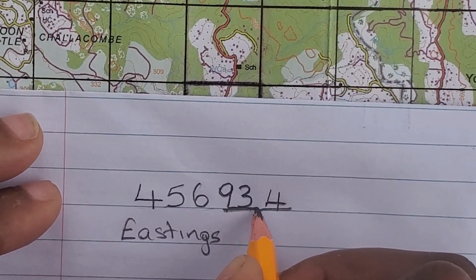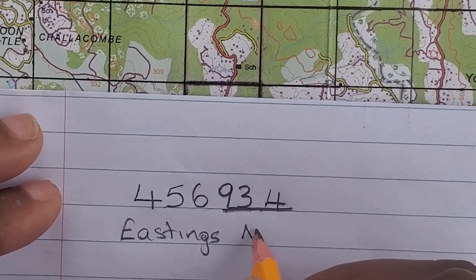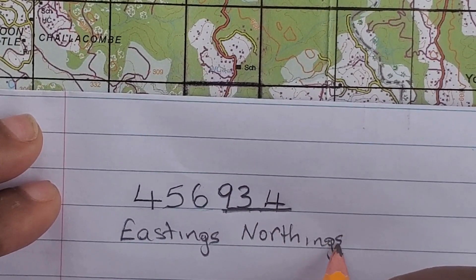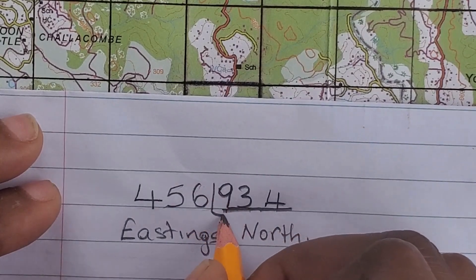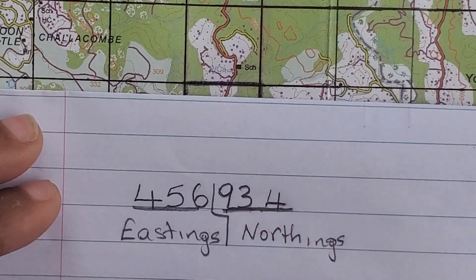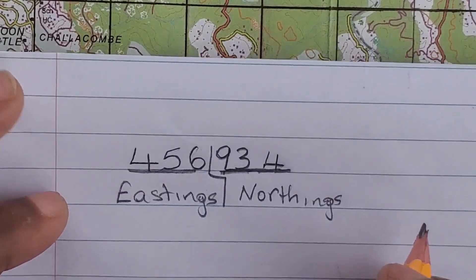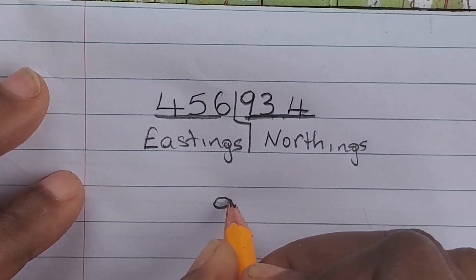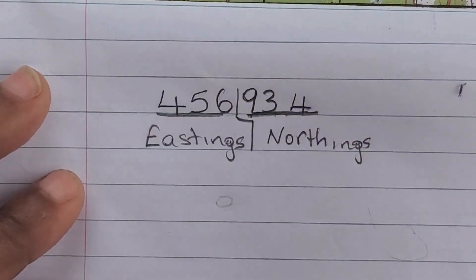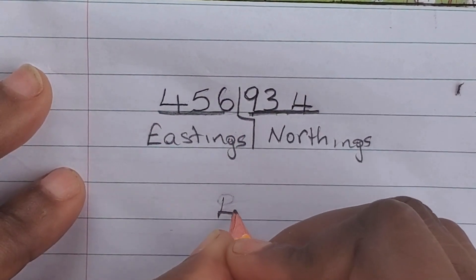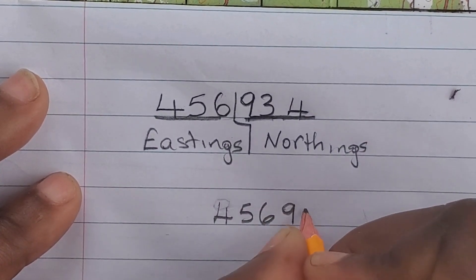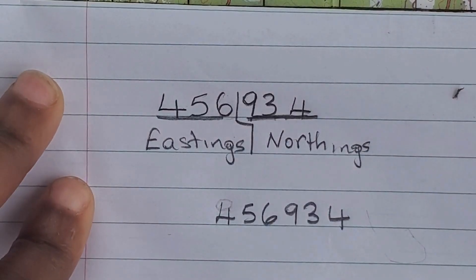So these final three digits are our northings: 3, 4. Combined with our 3 eastings and 3 northings, our final answer would look something like this: 4, 5, 6, 9, 3, 4. And there you have it — an easy way to find a six-figure grid reference on topographical maps.